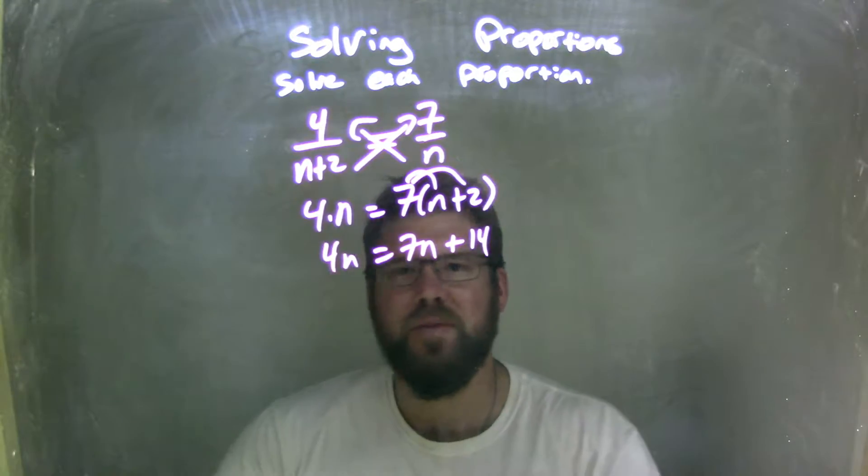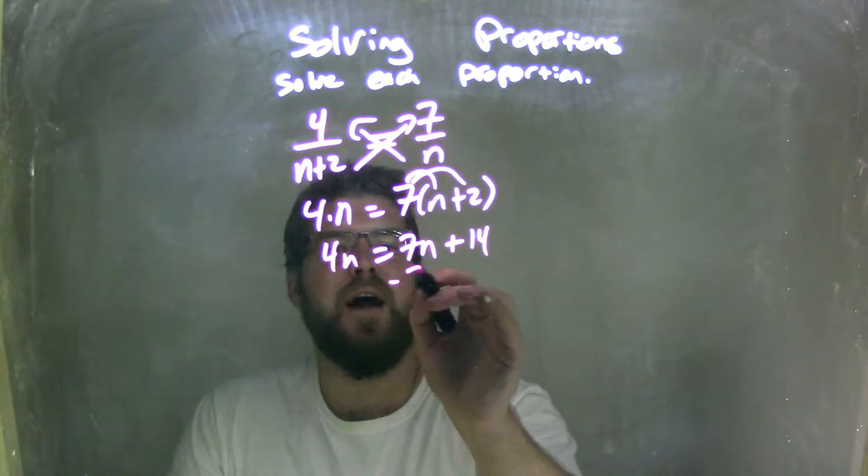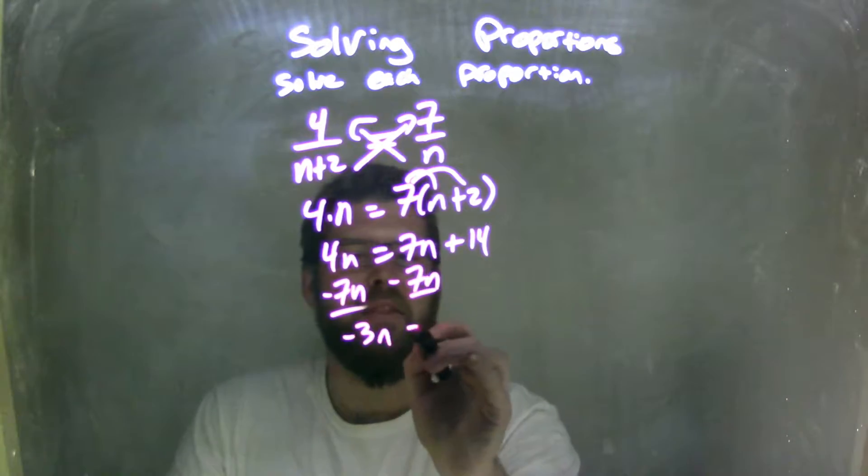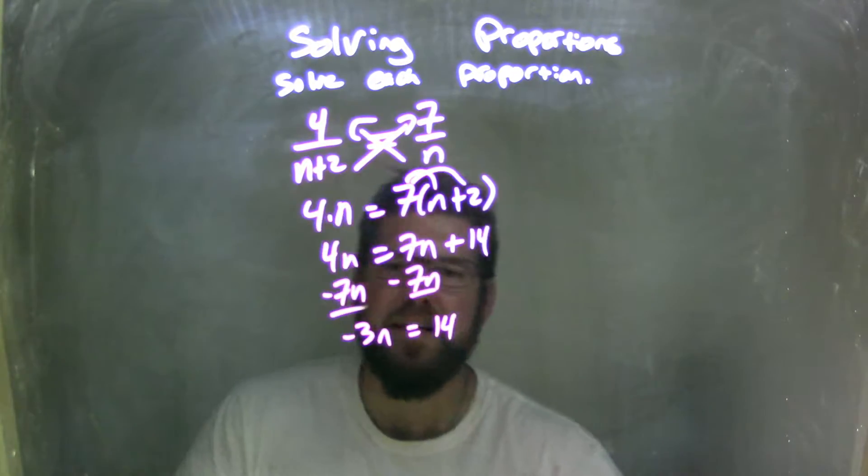Let's combine our like terms. This is a tricky part. I'm going to subtract the 7n to both sides. That gives me a negative 3n on the left and a positive 14 on the right.